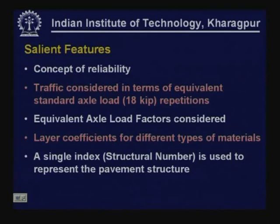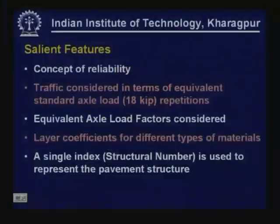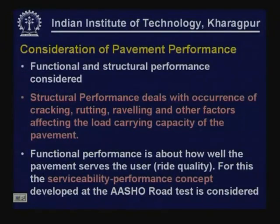A single index called the structural number is used to represent the pavement structure. Pavements may have any number of layers — three, four, or five — with different types of materials and different strengths, all represented in terms of one single index known as structural number. Structural number gives us the strength of the pavement and the condition of the pavement at any given point of time.